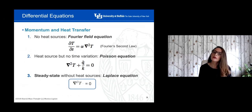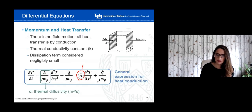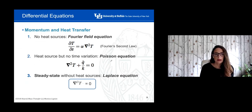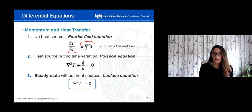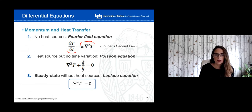Now let's look at different particular scenarios — specific conditions that allow us to simplify this general equation. The first is when there are no heat sources: that term cancels, and we have the dependence of temperature with time equal to the thermal conductivity times the Laplacian of temperature. This is called Fourier's second law. The second situation is when we have a heat source but no variation with time: the time term cancels, and we get the Laplacian of temperature plus the heat source term equal to zero. This is called the Poisson equation.